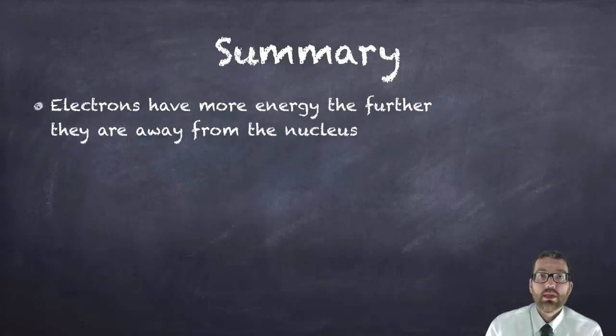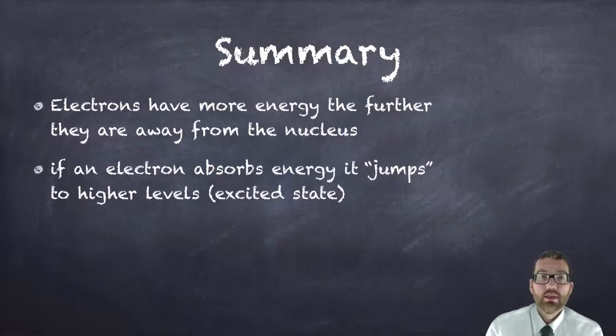Let's summarize what we've learned here. Electrons have more energy the further they are away from the nucleus. If an electron absorbs energy it can jump to higher energy levels. When that happens we say it is in an excited state.